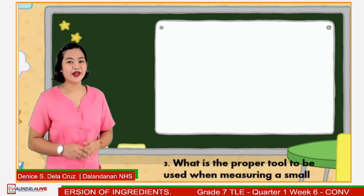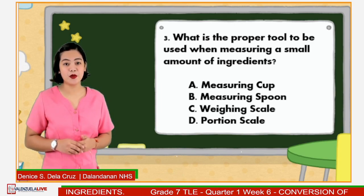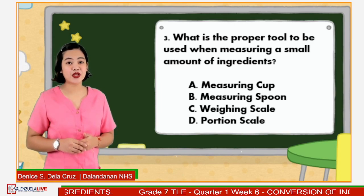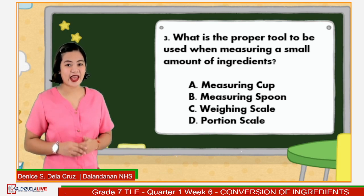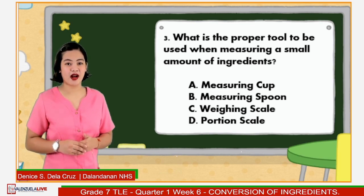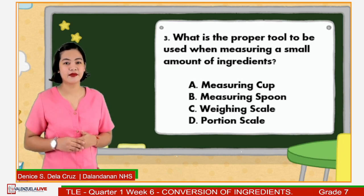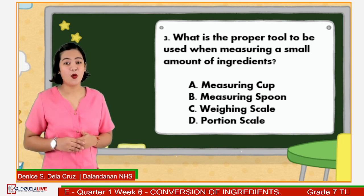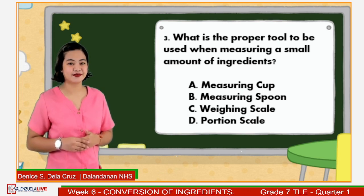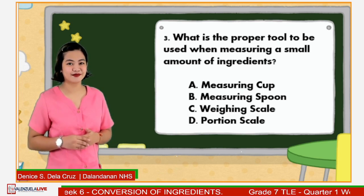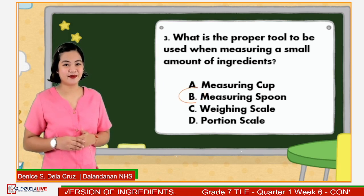Number 3: What is the proper measuring tool to be used when measuring a small amount of ingredients? Is it A: Measuring cup? B: Measuring spoon? C: Weighing scale? Or D: Portion scale? Marvelous! The answer is letter B.